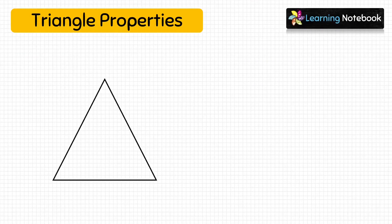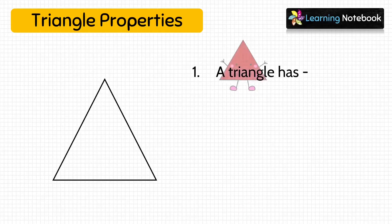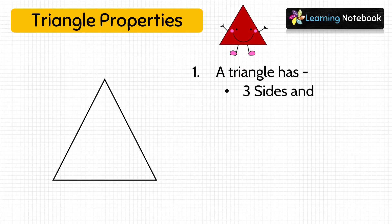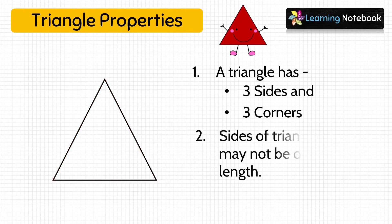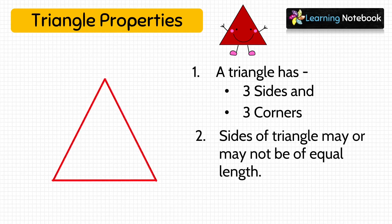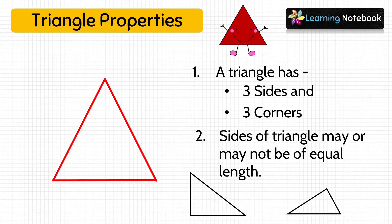The third basic shape is triangle. A triangle has three sides and three corners. Students, remember that sides of a triangle may or may not be of equal length. Like these two triangles, their sides are not of equal length.